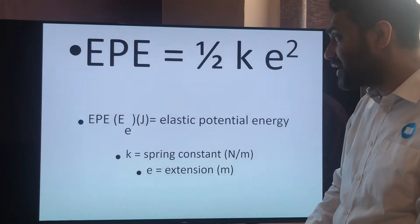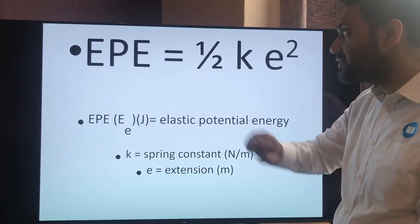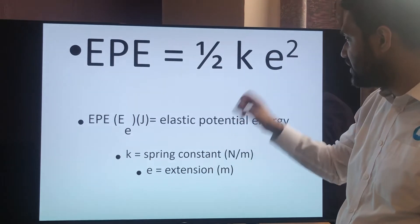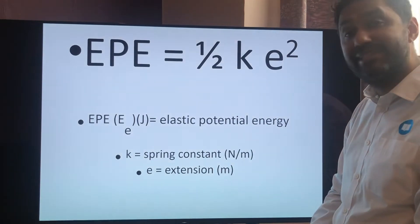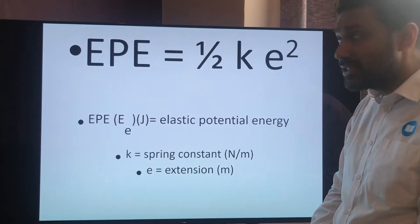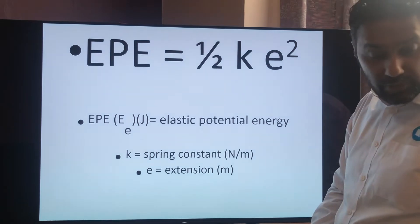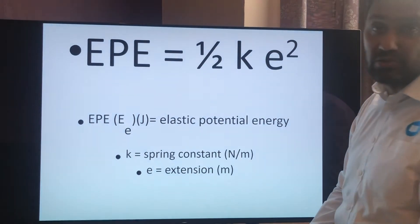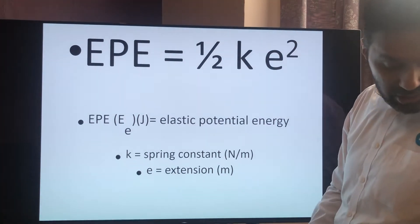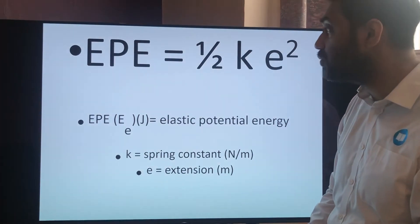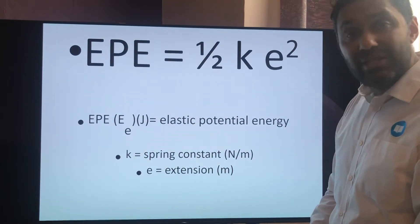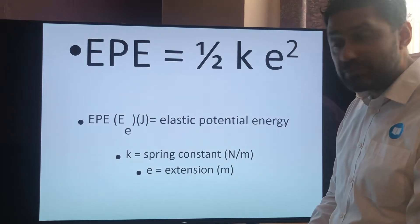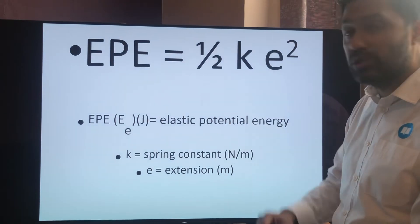So how do I calculate it? EPE equals 0.5 times the spring constant times the extension squared. There are questions on this in your Kaboodle textbook on page 12, so make sure you have a go at those. There are also kinetic energy questions on pages 12 and 13.